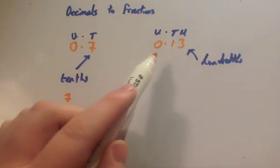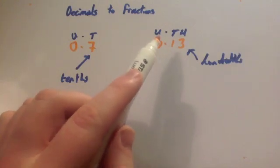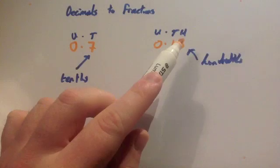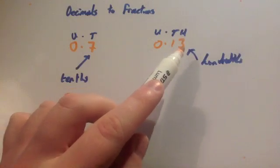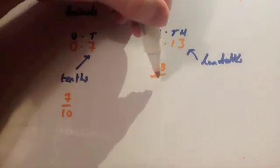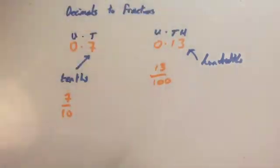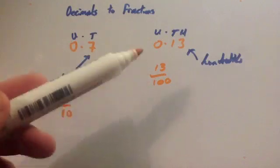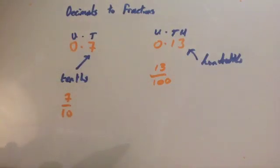OK, let's have a look at this one, 0.13, so you've got units, tenths, hundredths. So you've got 13 hundredths. So 13 hundredths, you'd write it as 13 hundredths, like so. Again, you would try to cancel it down if possible. Let's look at a couple more examples.